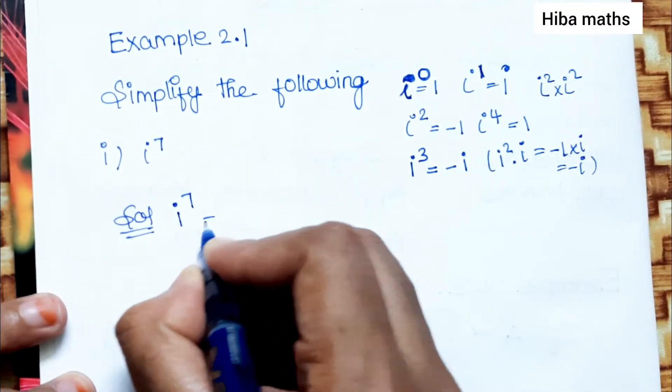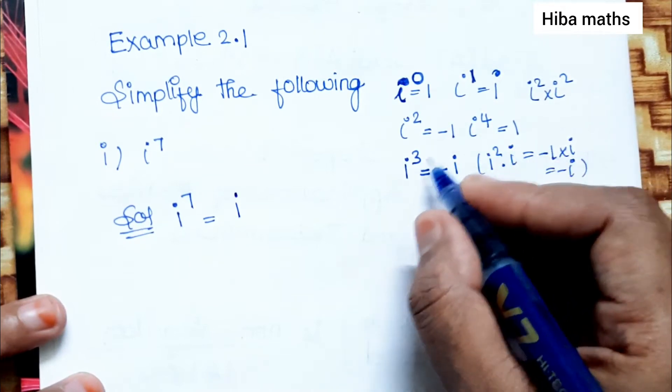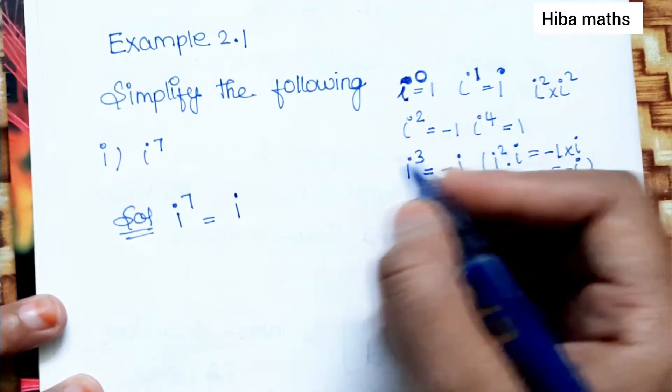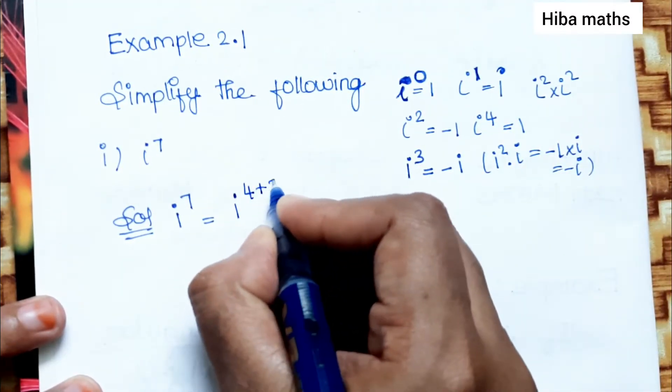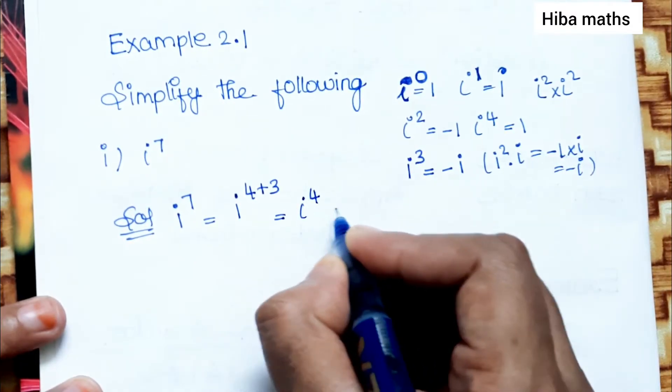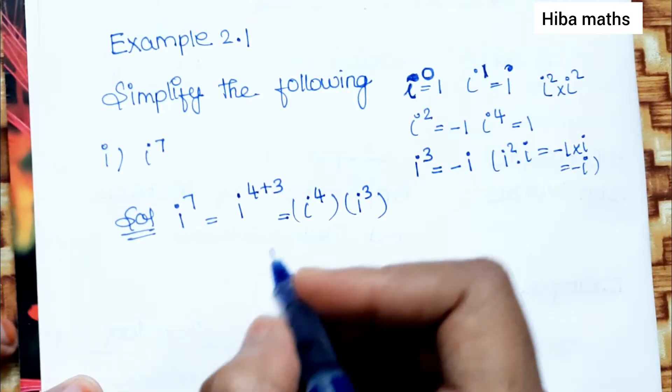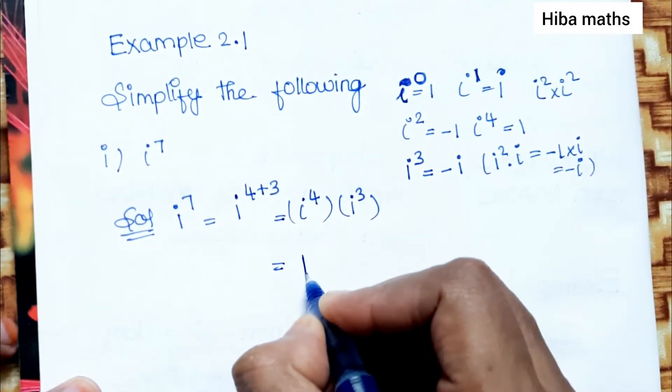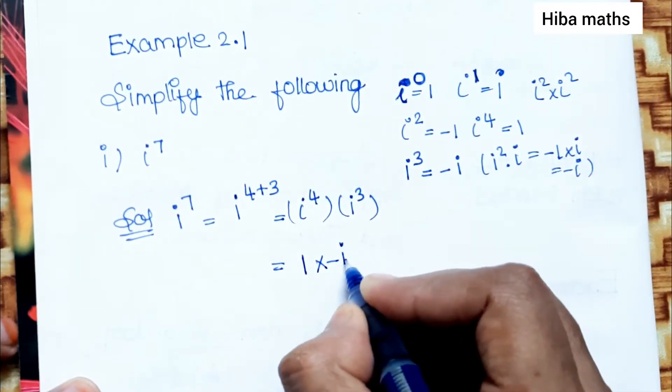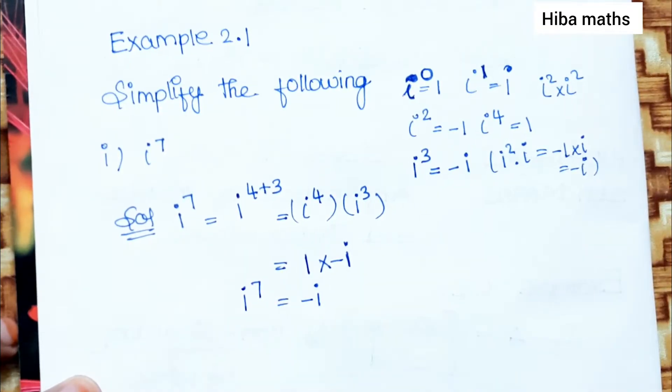First question, i power 7. i power 7, how do I split it? 4 and 3. 7, how do I split it? 5, 2 will split it, but 5 will not. So what do I do? 4 plus 3. Now I will add it. i power 4 plus 3 equals i power 4 into i power 3. So what do I do? 1 into minus i. Minus i. This is i power 7 value.